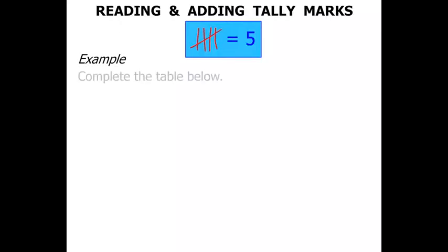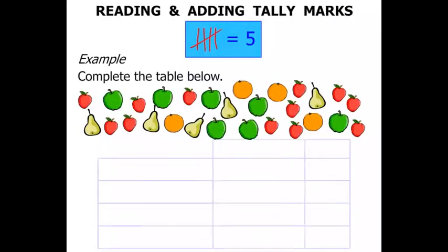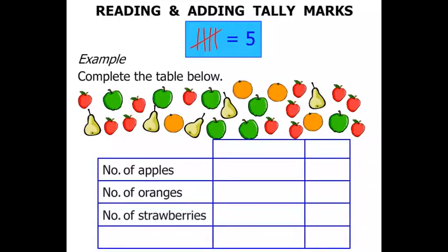Let's look at an example. We are asked to complete the table below. Lots of pieces of fruit there. And the table, the number of apples, number of oranges, number of strawberries and number of pears. We are going to have a tally column. And then finally a column that indicates the total.